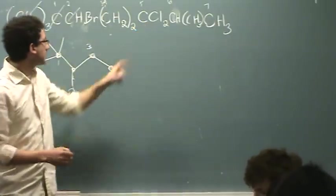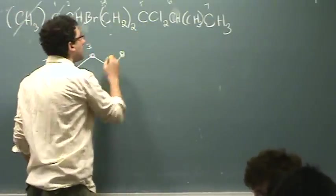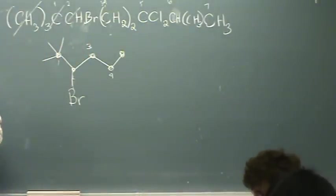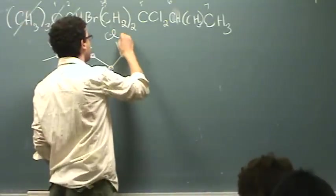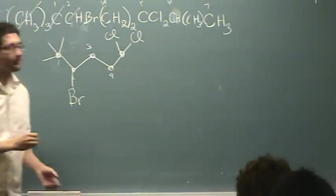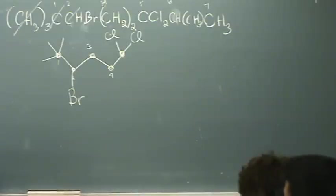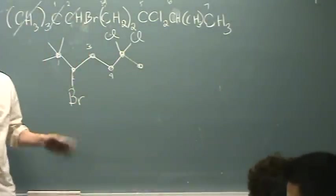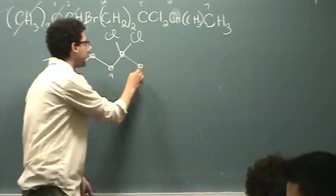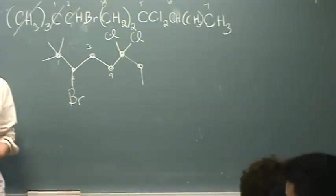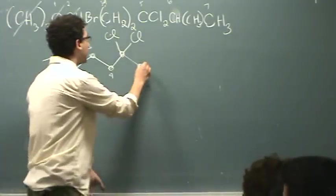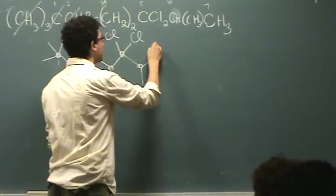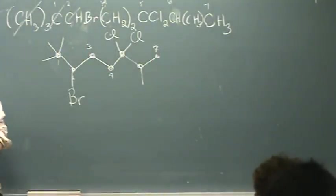Then there's a next carbon, number five. That fifth carbon has two Cls on it. Then there's a sixth carbon. That carbon has an H, which I won't draw, and a CH3. And then there's the seventh carbon, which is just a methyl group. Is that okay?